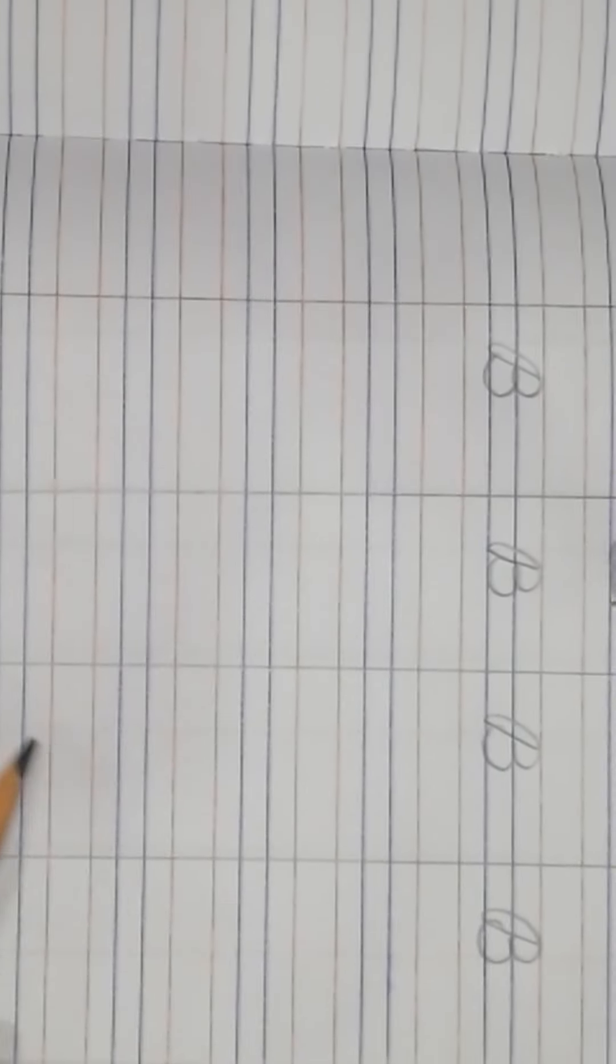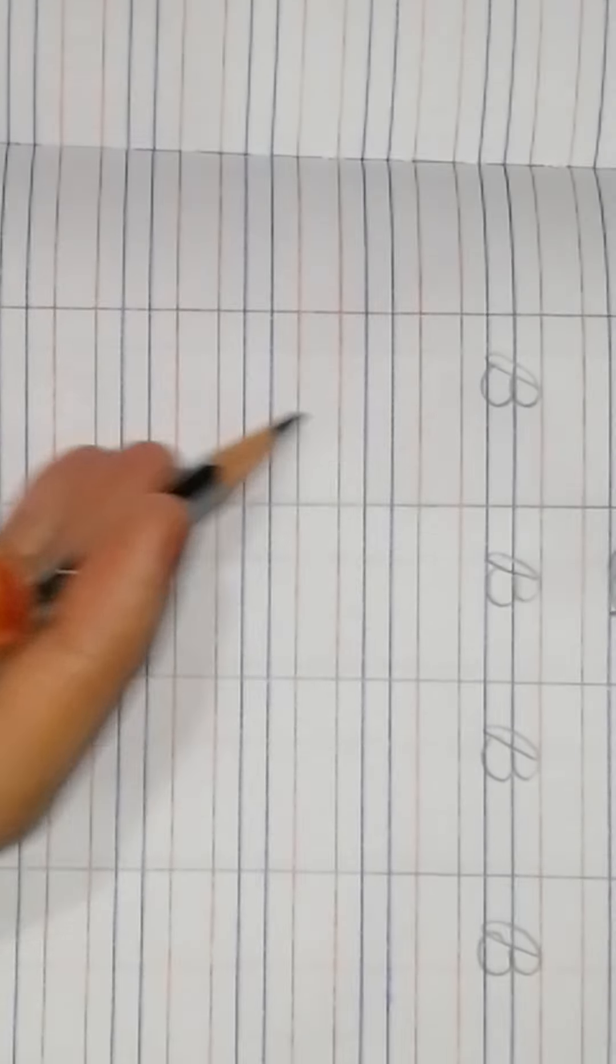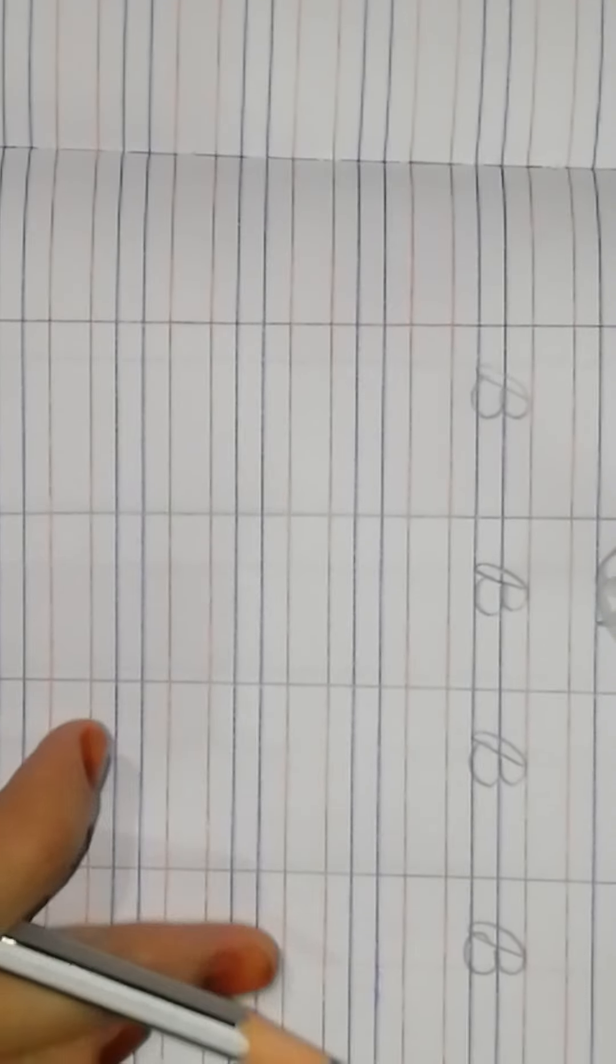So now, complete your full book like this and say and write B for butterfly, B for ball, you can say B for balloon, you can say B for bus, and write like this. Complete this.